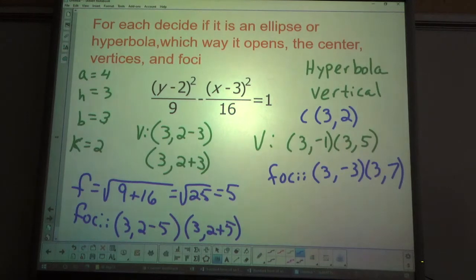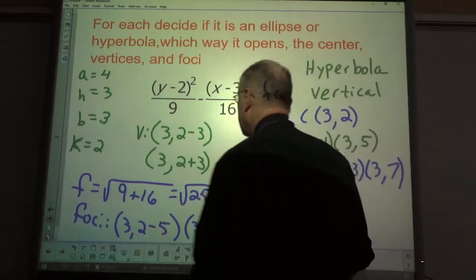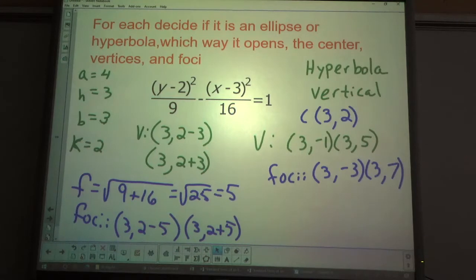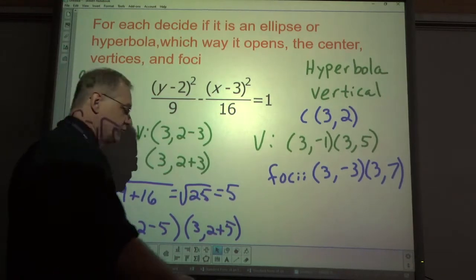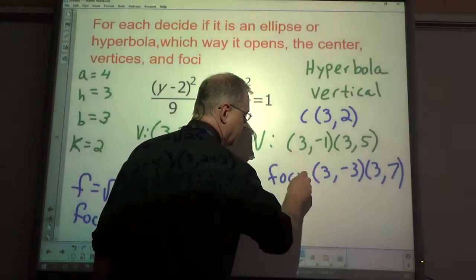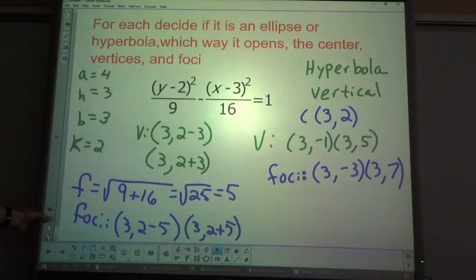The basic information: hyperbola, vertical, center at (3,2), vertices, and foci. We're not going to find the asymptotes in this case — I don't remember off the top of my head the exact method for finding asymptotes when it's not centered at (0,0).